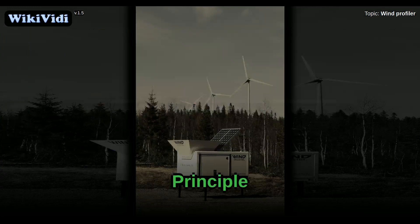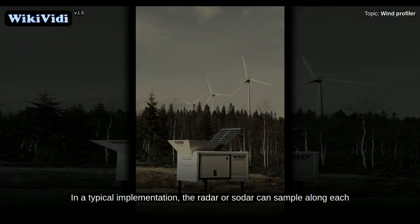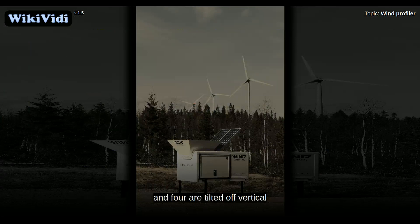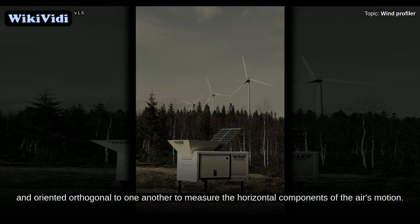Principle. In a typical implementation, the radar or SODA can sample along each of five beams. One is aimed vertically to measure vertical velocity, and four are tilted off vertical and oriented orthogonal to one another to measure the horizontal components of the air's motion.